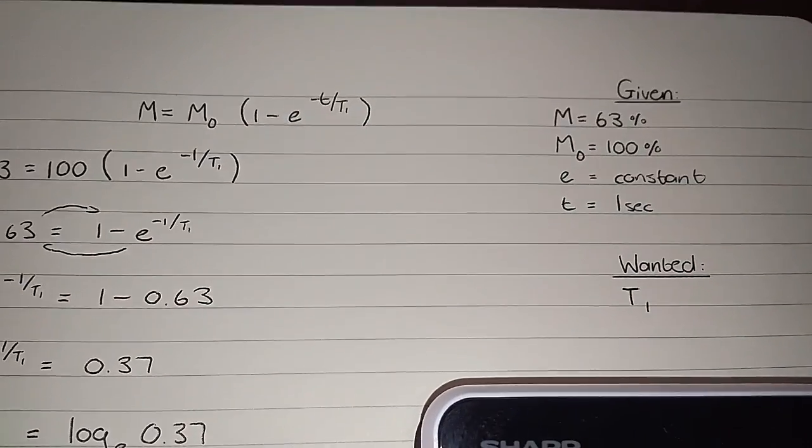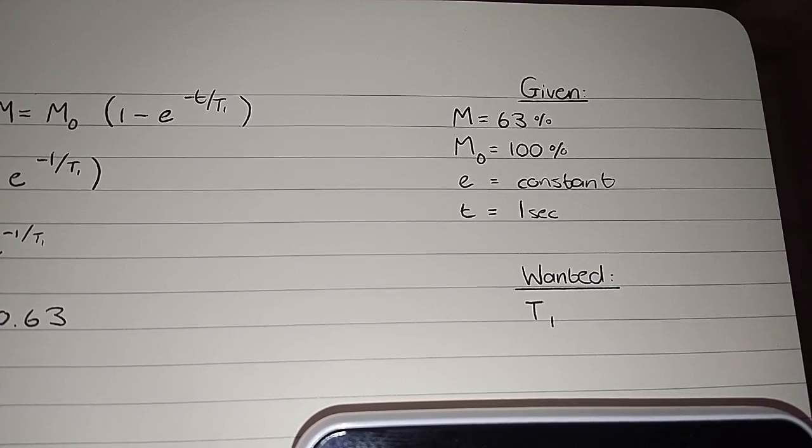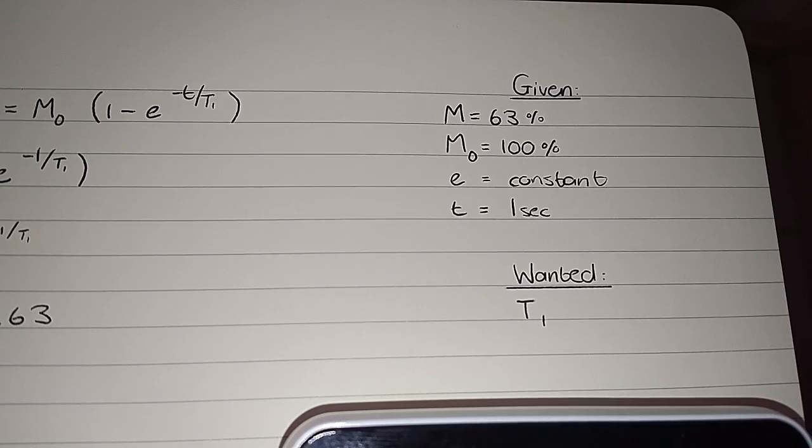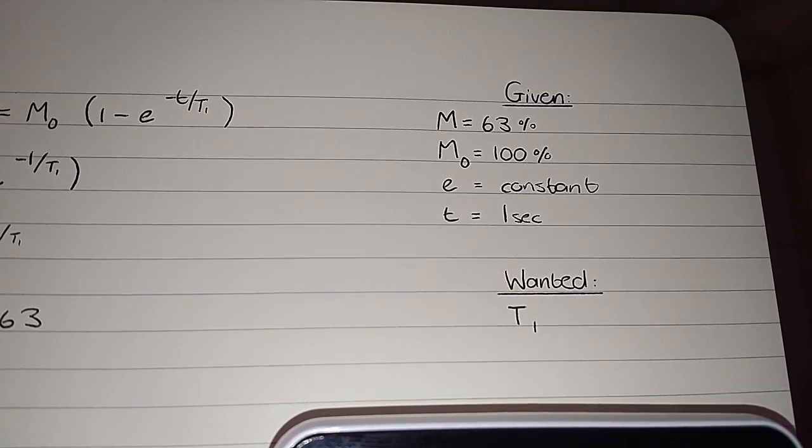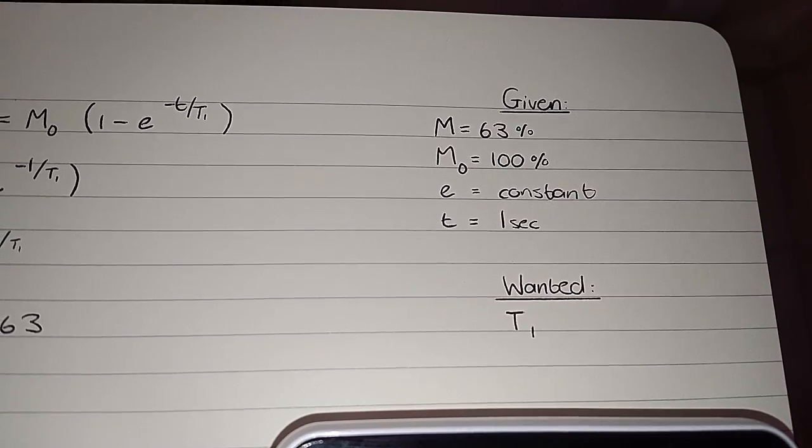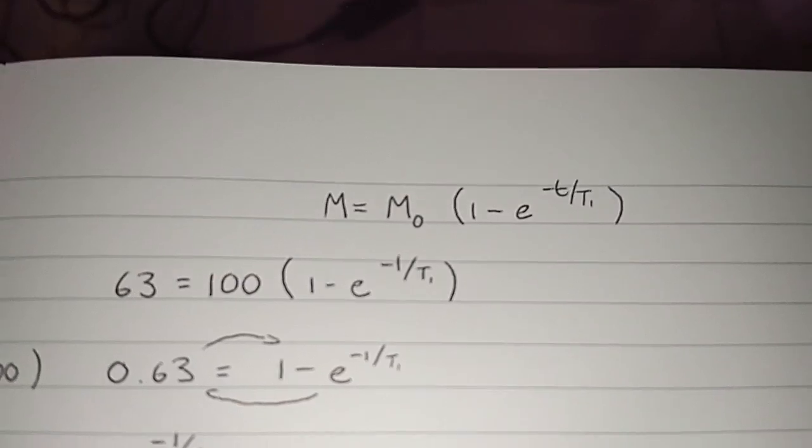So if we look over here, our given values are M at 63 percent, M naught is at 100 percent, e is that constant I told you about, t is 1 second, and we are looking for the value of T1.